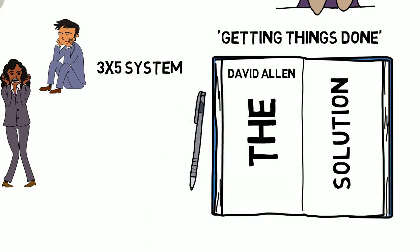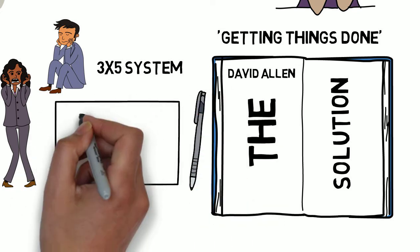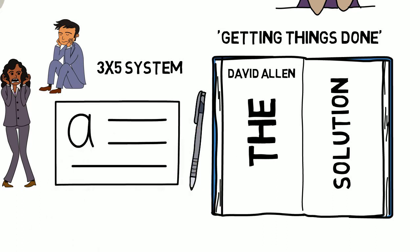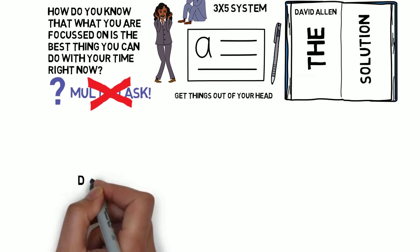On each of these cards you write one thing you need to do, with the secret being that anything that's floating around in your head is down on one of these index cards. Then you categorise these cards into 4 groups.